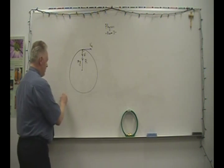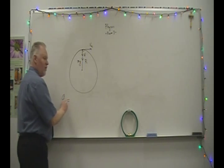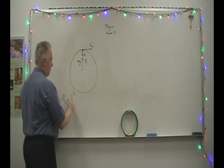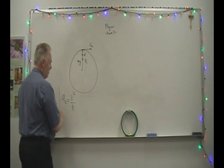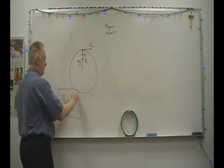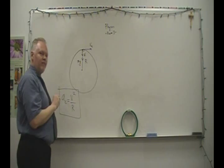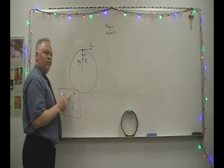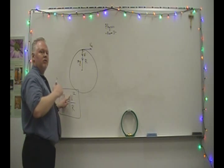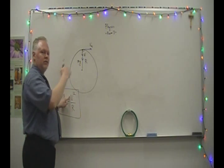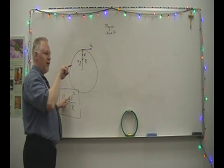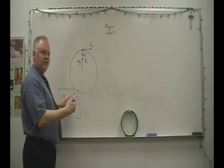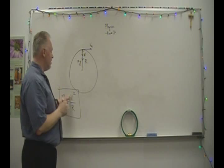Recall that the centripetal acceleration, if you want its magnitude, is equal to the tangential speed squared divided by the radius of curvature. This is a useful formula. But this is not an example of motion under constant acceleration — this is an example of uniform circular motion where the object is going around the circle at a constant speed. But since its velocity vector is constantly changing direction, it is accelerating. That's non-negotiable.